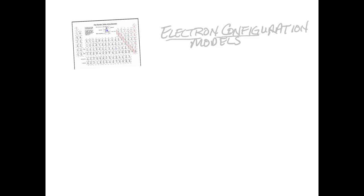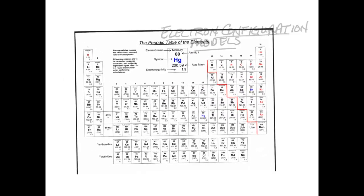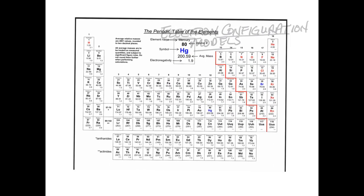In this video I'm going to teach you how to draw electron configuration models of atoms. In the top left corner of the screen I have a periodic table that will always be right there — you can use it for your tests and quizzes. For homework, the periodic table in your textbook will work just fine.